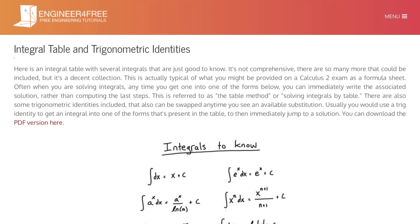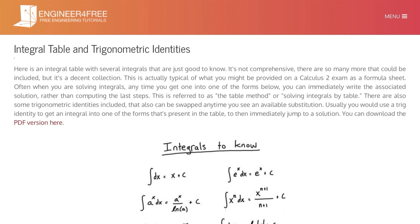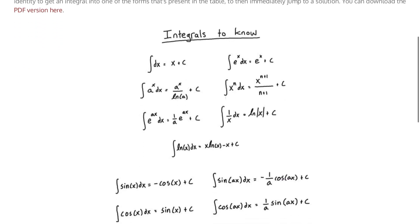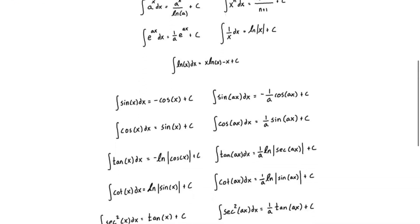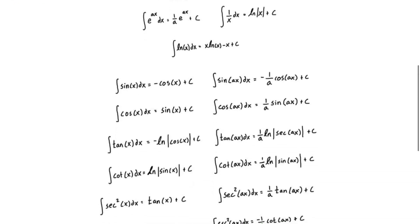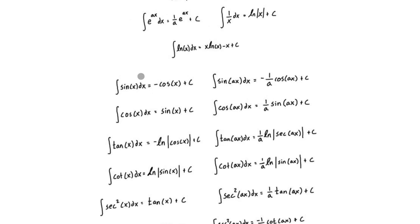And this is a link that's on the Engineer for Free website. I'll put the link in the description below where you can get this, but this is just a typical table that you would probably have in a calculus 2 exam anyways, or calculus exam. But basically here we're looking for the integral of sine of x, and we can see here, basically it's here. The integral of sine of x is equal to negative cos of x plus c.